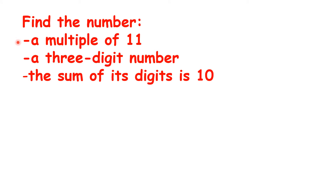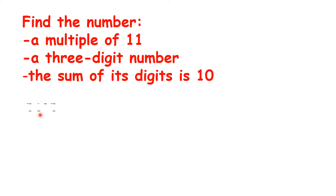Now we want a multiple of eleven, a three-digit number, and the sum of its digits is ten. So ten times eleven is a hundred and ten, but one plus one plus zero is two. Eleven times eleven is one hundred and twenty-one, but one plus two plus one is four, not ten.